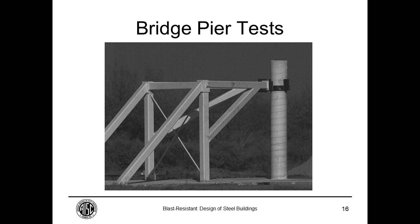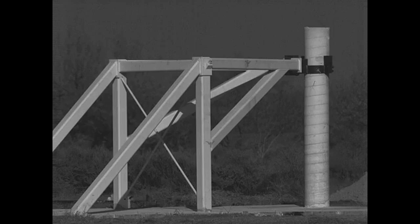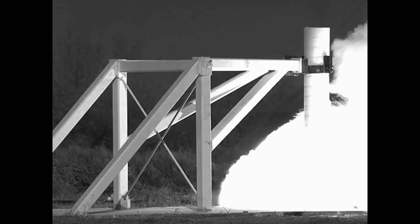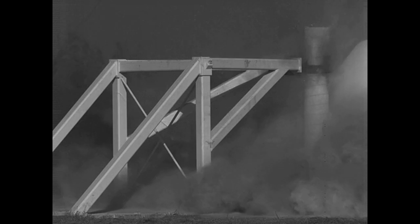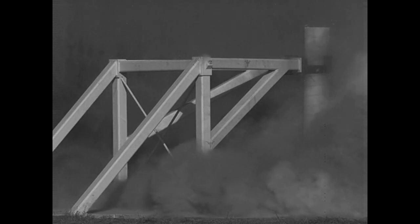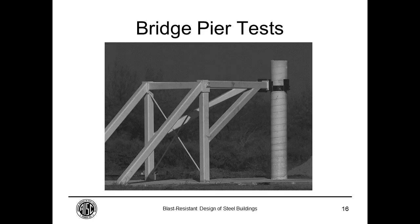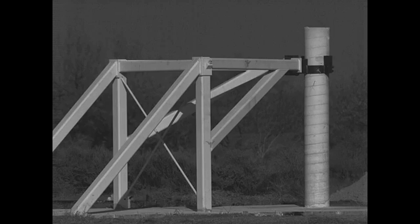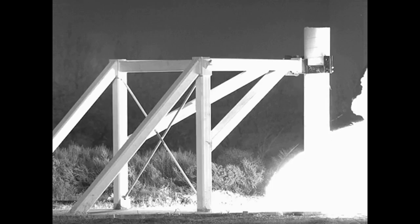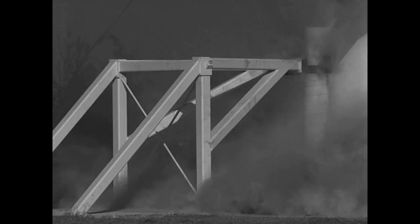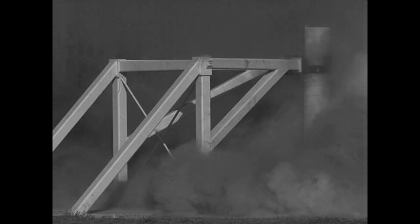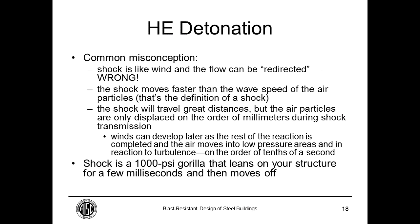A video demonstrates the shock front moving through air from right to left, visible because of the density difference in front of and behind the air shock. You can see the shock front interact with a simulated bridge pier and reaction structure. Played again, you'll see the flash, then the dark line moving and changing shape as it interacts with structures in its path — that's the air blast front and the instantaneous pressure rise that accompanies the shock front.